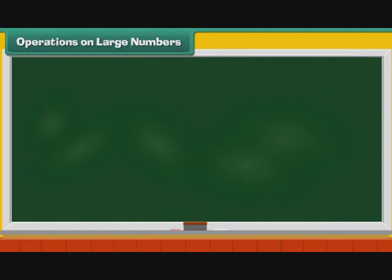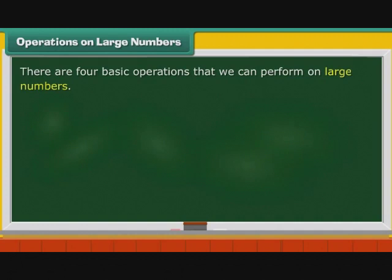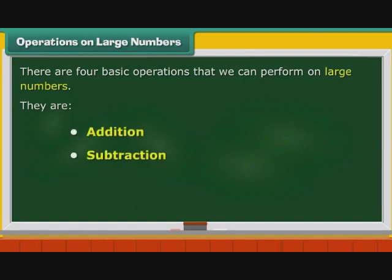Operations on large numbers. There are four basic operations that we can perform on large numbers. They are Addition, Subtraction, Multiplication, and Division. Let us look at them one by one in detail.